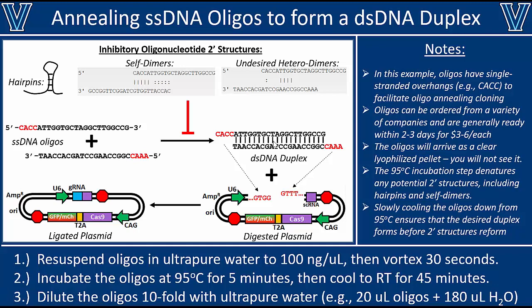To address this problem, we start by mixing the oligos and then incubate them at 95 degrees Celsius for five minutes. That's going to melt apart any of these undesired secondary structures. After that, we slowly cool the mixture down to room temperature over the course of 45 minutes. As the temperature decreases, we should hit a temperature at which the desired duplex forms first, because this duplex has a lot of hydrogen bonding. If we cool down farther, we'd reach temperatures where those other secondary structures would form — but those would be at much lower temperatures. Therefore, we're giving the duplex the first opportunity to form before any secondary structures can reform.